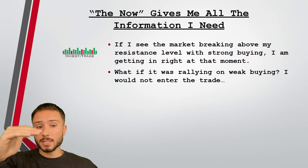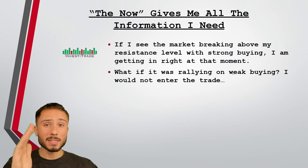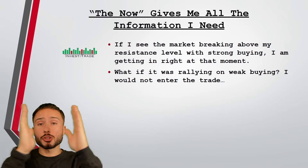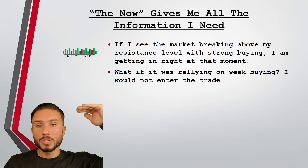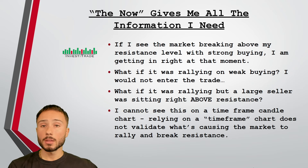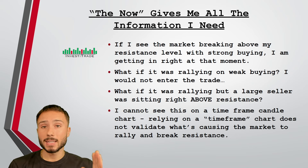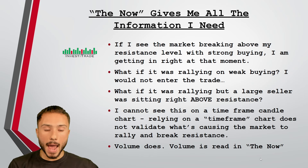If I was looking to get long Tesla above its resistance level, I can't see if that rally up and that green candle was on weak buying. You could have sellers willing to sell at higher prices that make the market gravitate higher — making it look strong, but it's really not strong at all. Relying on a time frame does not validate what's causing the market to rally and break that resistance level. The market rallies up and breaks that resistance because the buying was aggressive — however, if the buying is weak, then I would not be buying that breakout. This all gets confirmed in the now, in that present moment.